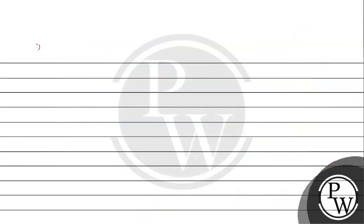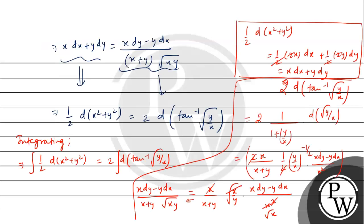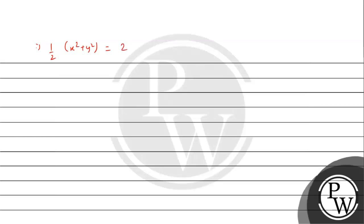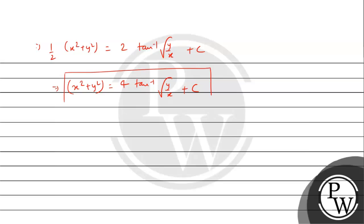Integrating: 1/2 comes out as a constant, giving (1/2)(x² + y²) = 2·tan⁻¹(√(y/x)) + c. Multiplying both sides by 2, we get x² + y² = 4·tan⁻¹(√(y/x)) + c. This is our answer.